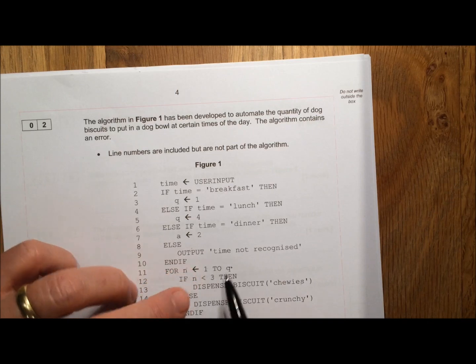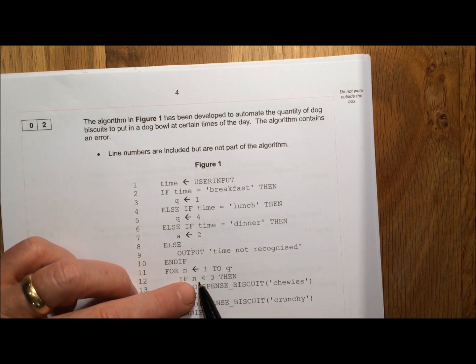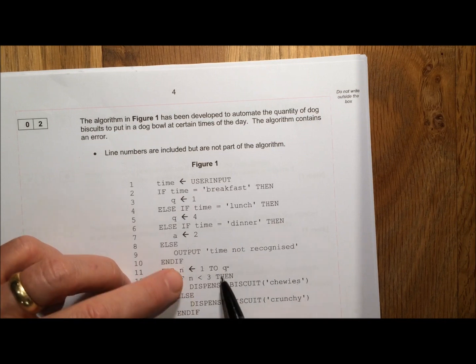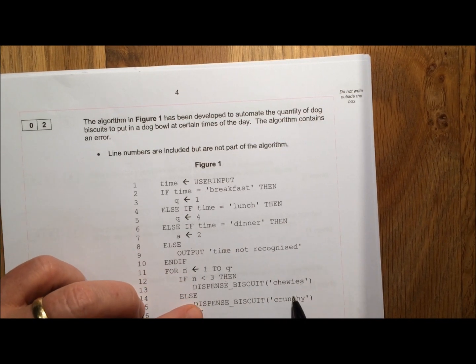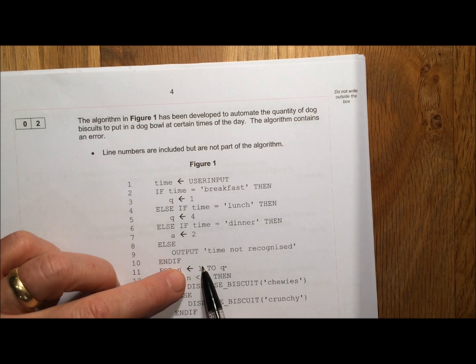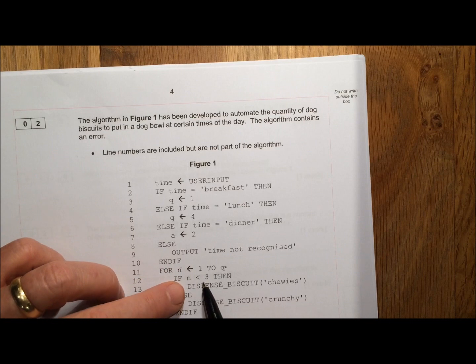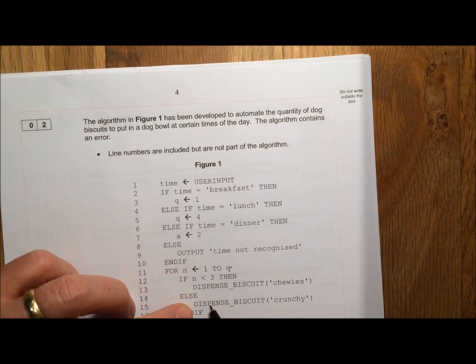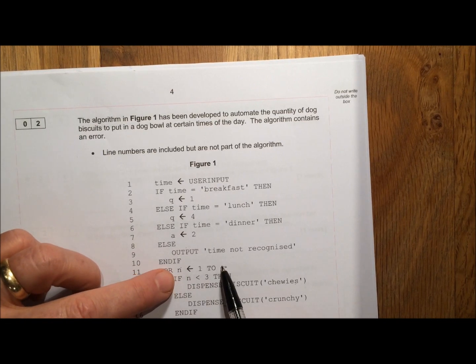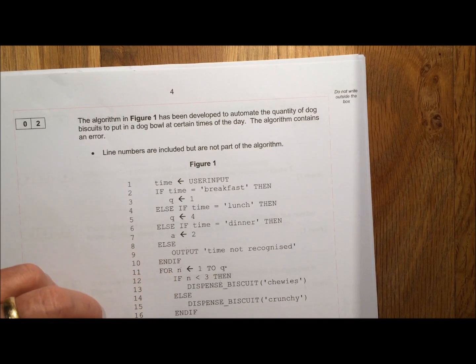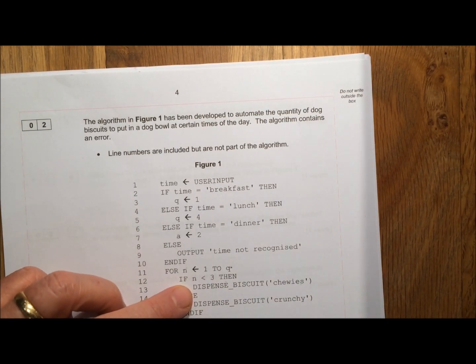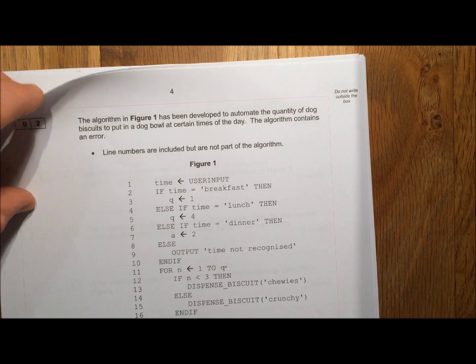Back we go again. N is now 3. Is 3 less than 3? No it's not. So we dispense biscuits crunchy. We do the alternative dispense biscuits crunchy. Back we go again. N is now 4. Is N less than 3? No it's not. So now we'll do this one. Back we go again. N has reached its limit, which is 4. We've only done dispense biscuits chewies twice. So the correct answer is 2.